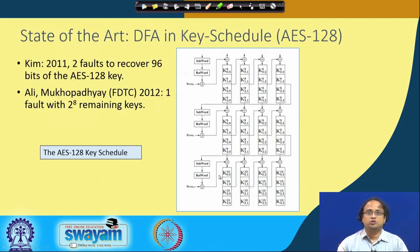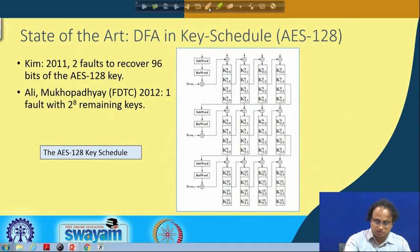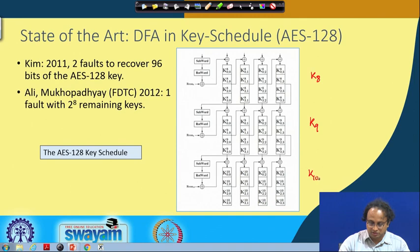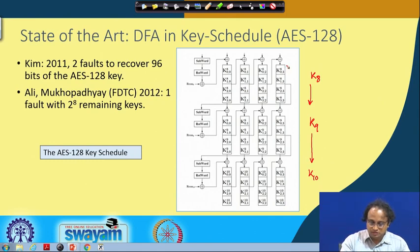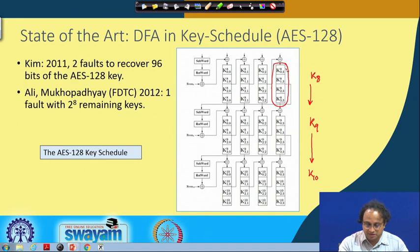Let us take a look at how DFA has been reported on the key schedule in AES. This is a recapitulation of how the key schedule works in AES-128. This is the 8th round key followed by the 9th round key followed by the 10th round key. How does this round key transformation work? Remember that this is the last column of the 8th round key. What you basically do is a SubWord — every byte here is transformed by an S-box.